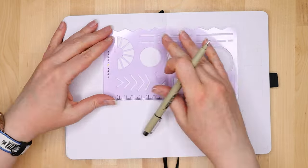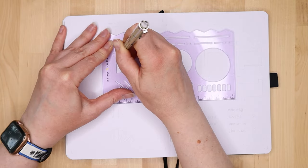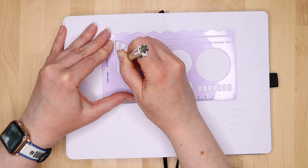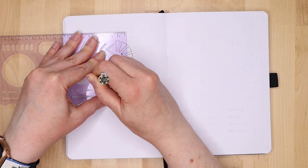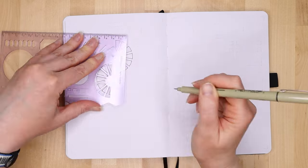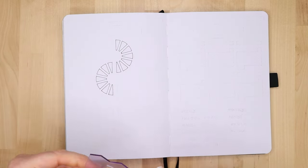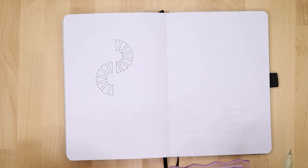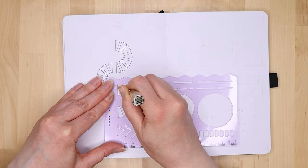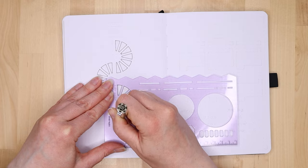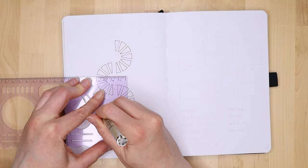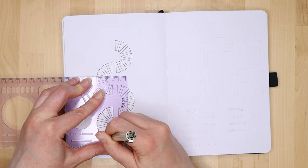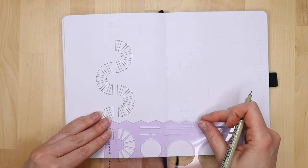The next spread is my trackers. On the left hand side this is going to be my mood tracker and on the right hand side it's going to be my habits. Notebook therapy, not sure if you're aware of them, that's who the stencil is from. I saw a really great reel that they did on Instagram where they created a mood tracker in this way. I thought it was a great idea so I decided to recreate that for this month.